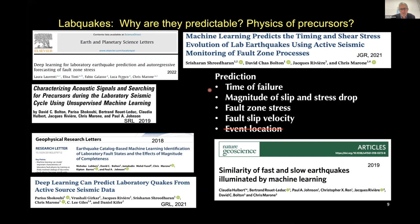Lots of stuff has happened since 2017. What's possible now is that we can predict the time of failure, we're predicting the magnitude of the stress drop, we're predicting the fault zone strength, and the fault zone slip velocity. Here are a few papers that cover the work we've been involved in. I focused on the stuff that came out of data sets from my lab.